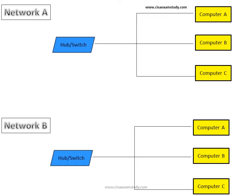Let us understand how a router works. We have two different independent networks — network A and network B. A router is used to connect these independent networks, so any computer from network A can send a message to network B, and network B can send a message to network A through the router.